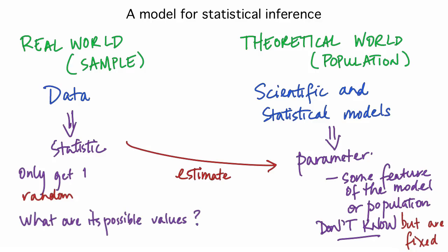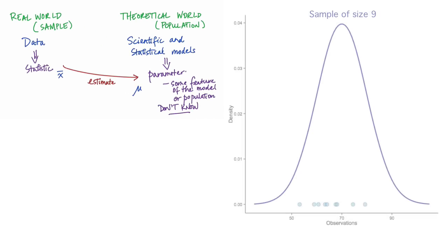We are going to talk now about the mean. It's often a goal to understand the typical or central value of measurements, so the mean is a common parameter that we'd like to make inferences about. We'll call our theoretical world mean the Greek letter mu, and we'll estimate it by the sample mean x-bar. Here's a possible real world situation: we observe 9 data values, random measurements from a sample of size 9, and we calculate the average or sample mean. This purple vertical bar is at the average. This average is a statistic calculated from our data — an example of an x-bar which we could use to estimate mu.